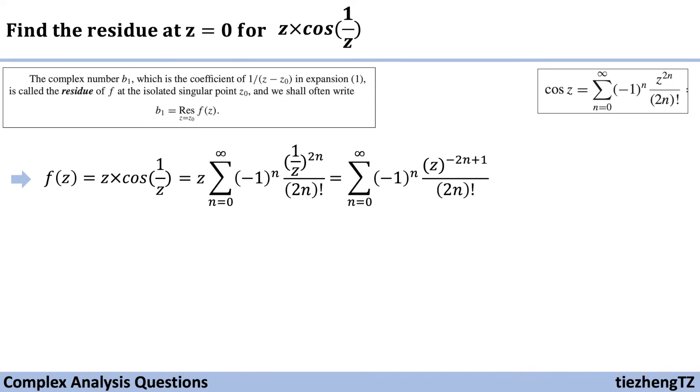And to find the residue, we need to locate the coefficient which is in front of the term 1 over z minus z0. And I'm sure you have already noticed that when n equals 1, we have z to the power of minus 1, which is 1 over z. So we have this term.